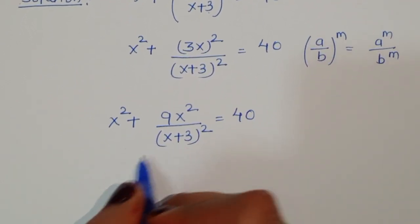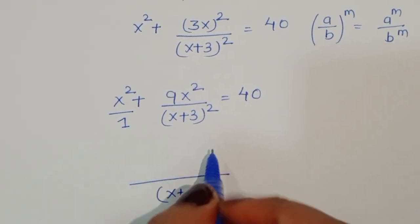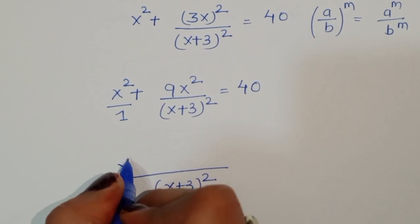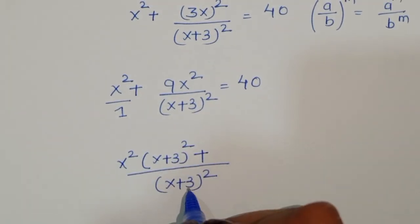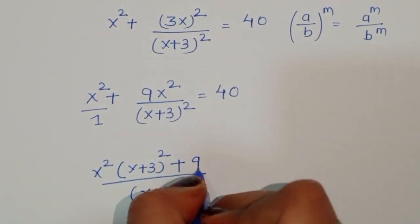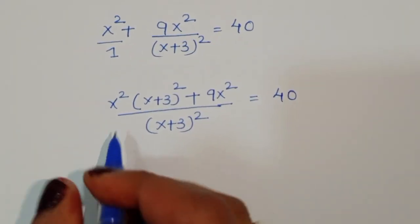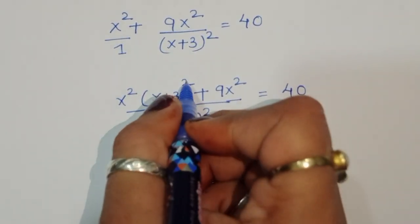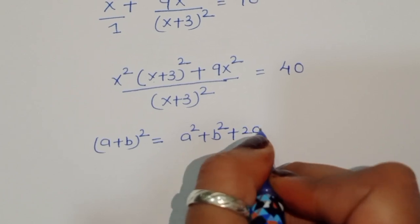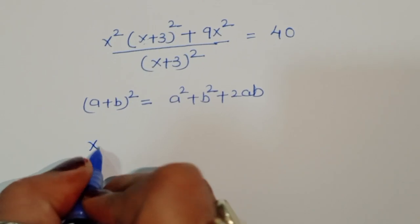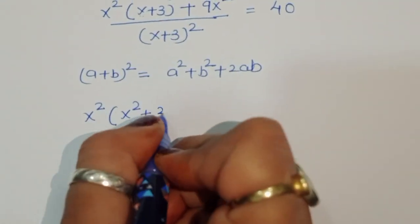Taking LCM as (x+3)², we get x² × (x+3)² + 9x² all over (x+3)² = 40. Now expanding (x+3)² using (a+b)² = a² + b² + 2ab, we get x² times (x² + 9 + 6x) plus 9x², divided by (x+3)² = 40.